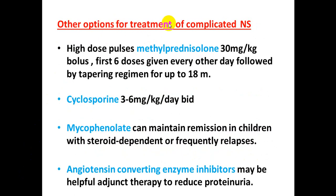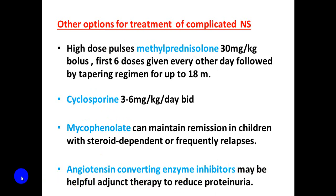Other options for treatment of complicated, steroid-resistant, and steroid-dependent nephrotic syndrome include high-dose methylprednisolone pulses, cyclophosphamide, mycophenolate, and angiotensin-converting enzyme inhibitors like captopril, which can be used as adjuvant therapy to reduce proteinuria.